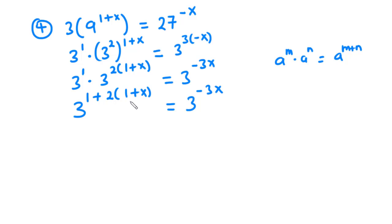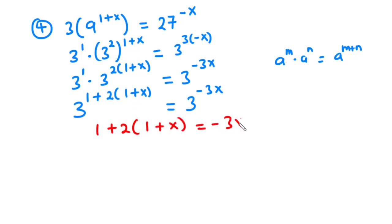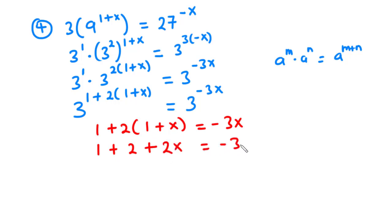Now let's compare their exponents. So we have 1 plus 2 into bracket 1 plus x equals negative 3x. Now let's multiply across. We have 2 times 1 which is 2, and then 2 times x which is 2x, equal to negative 3x.